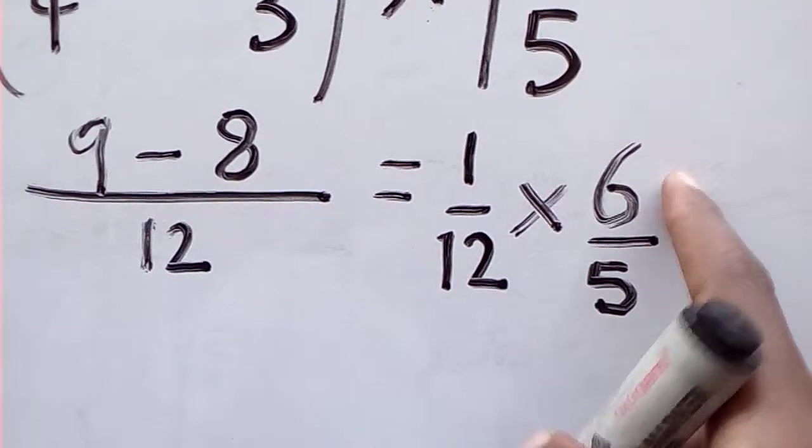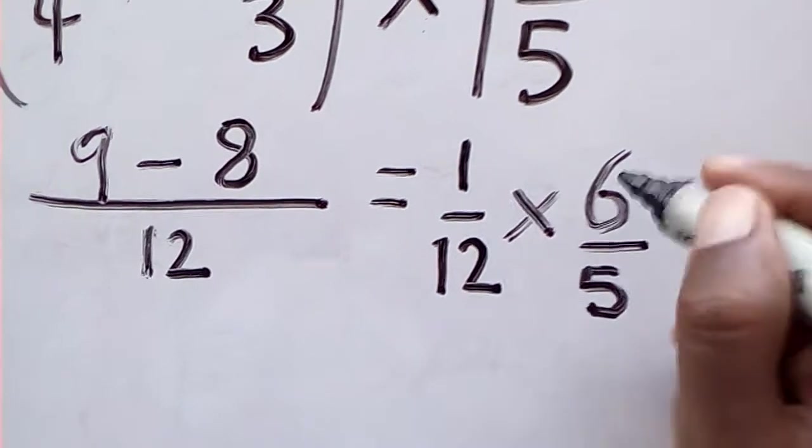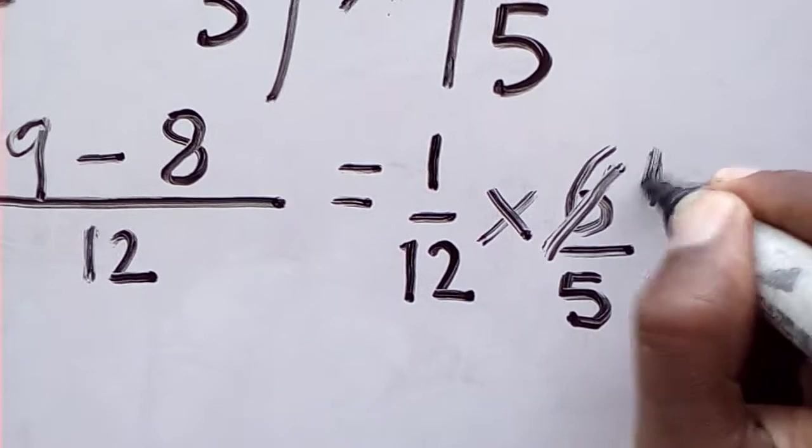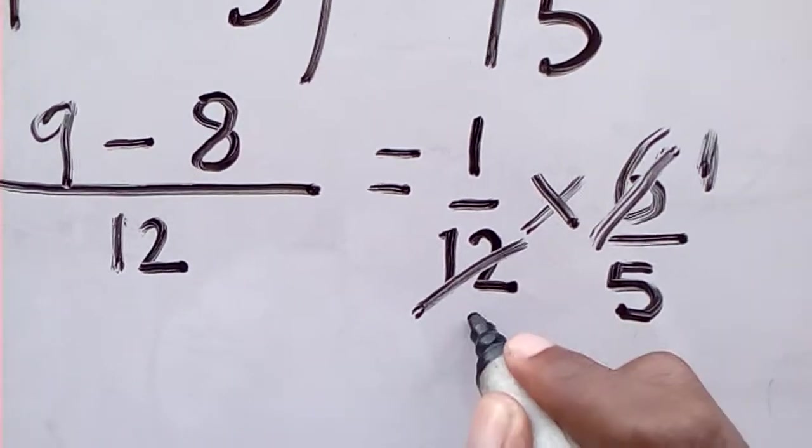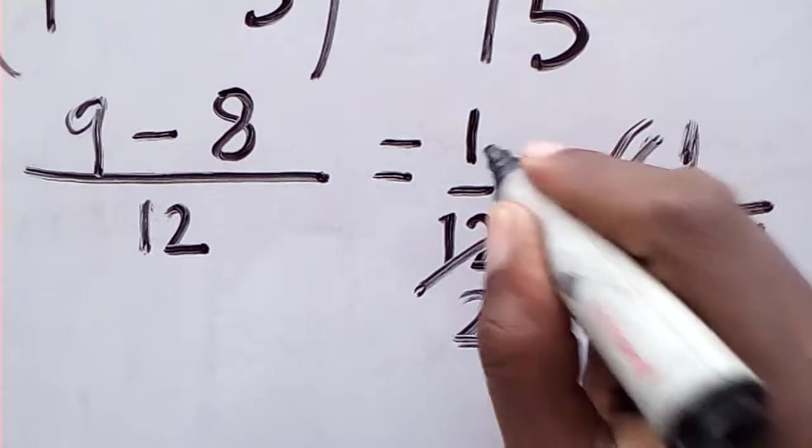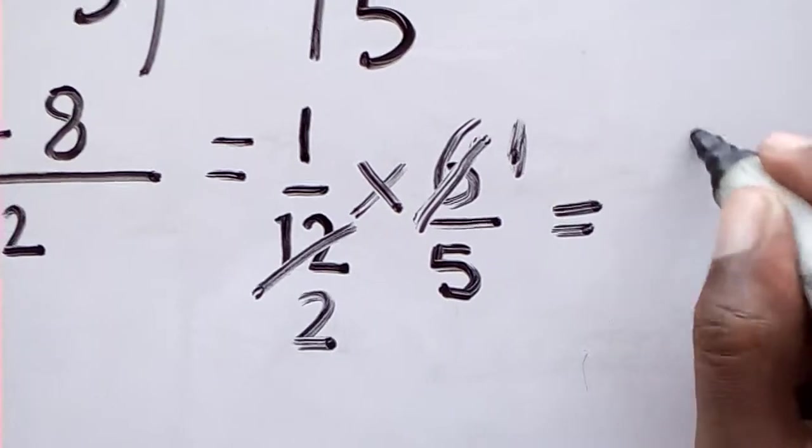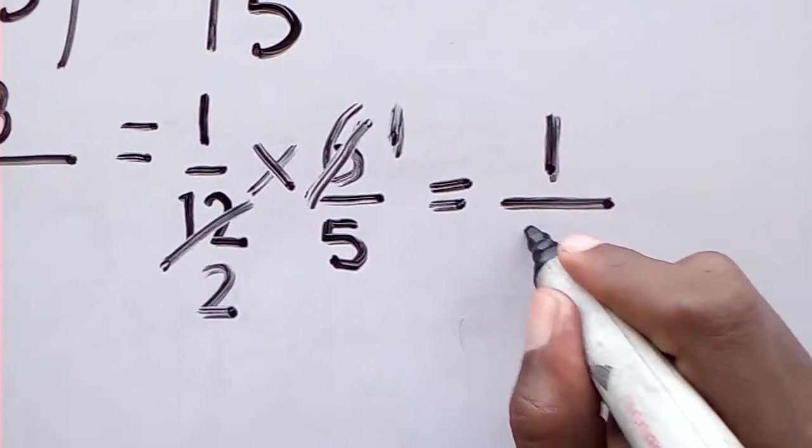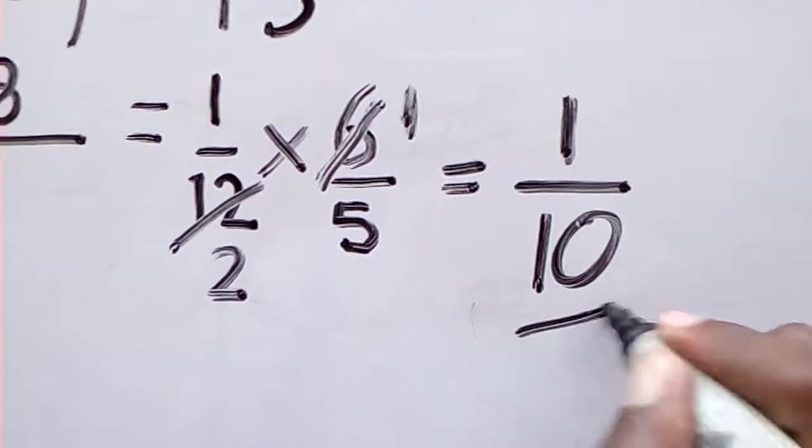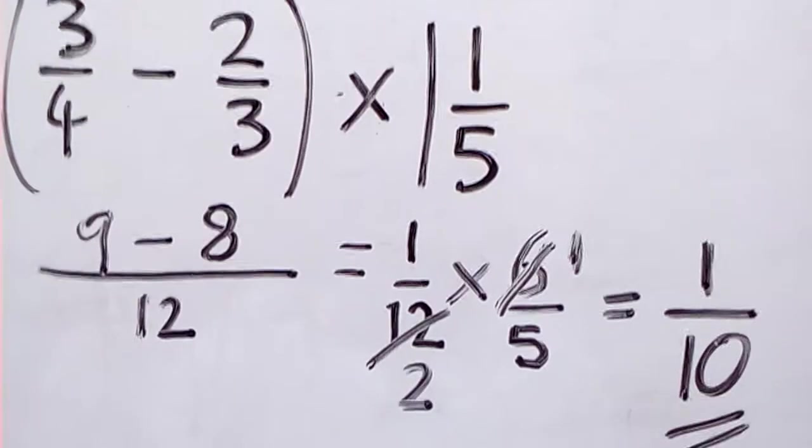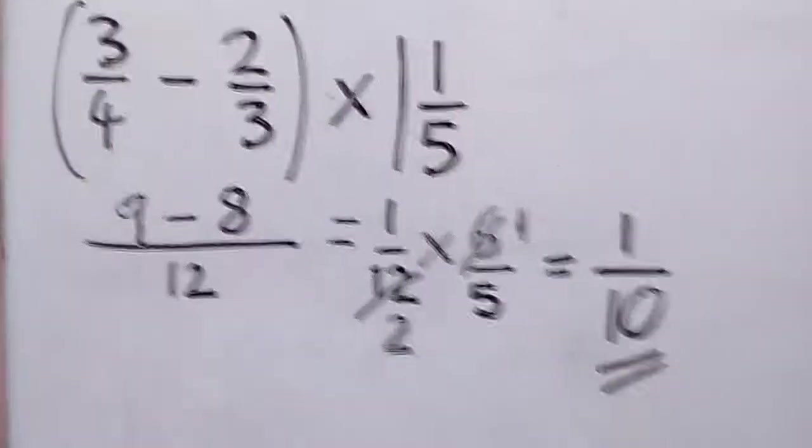Let's go: 6 goes in here one time, and 6 goes into 12 two times. So what am I left with? 1 times 1 will give me 1, and 2 times 5 will give me 10, and that's my answer. You can see the whole working all in one screen.